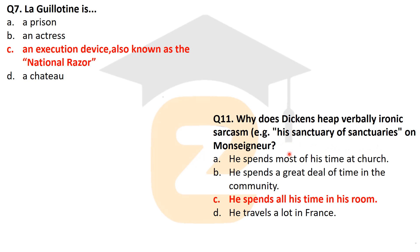The next question: why does Dickens heap verbal irony and sarcasm with the phrase 'sanctuary of centuries' on Monseigneur? Because he spends all his time in his room. Monseigneur represented a kind of archbishop figure, and Charles Dickens mocked him through this character with the remark 'sanctuary of centuries,' because he spent all his time in his room.